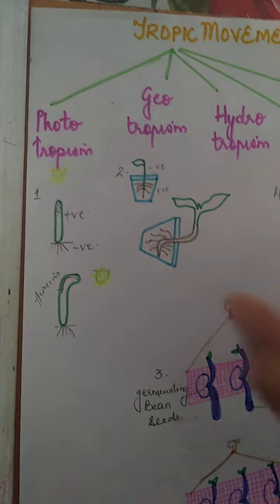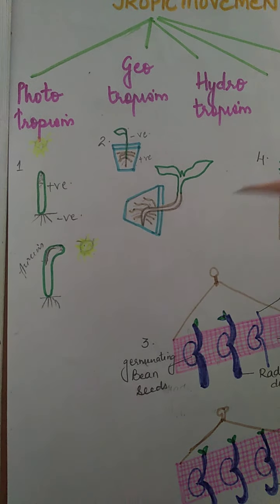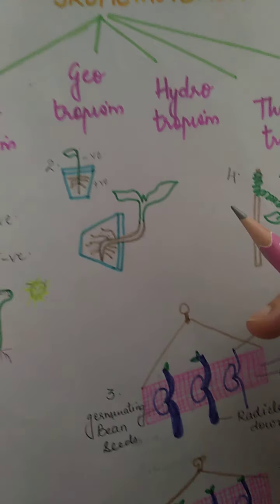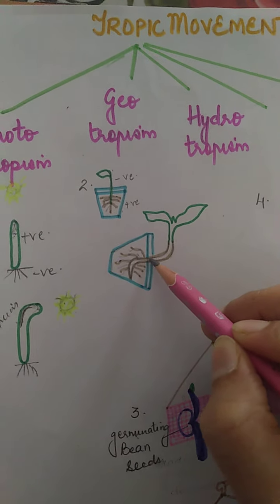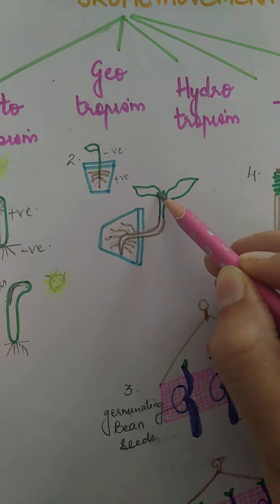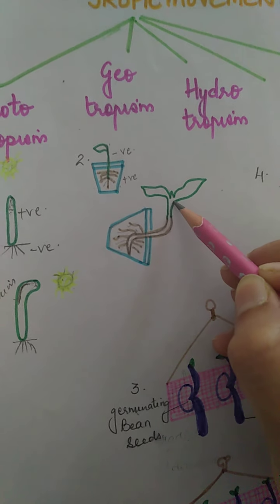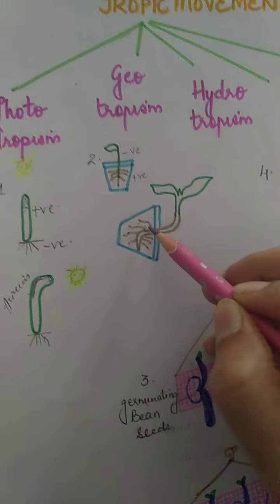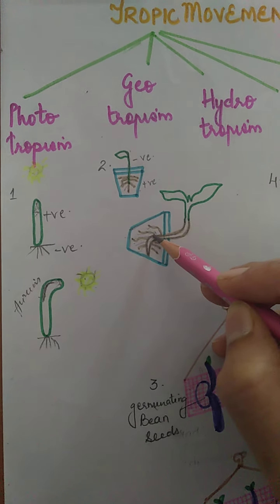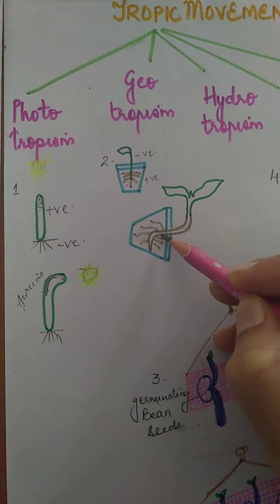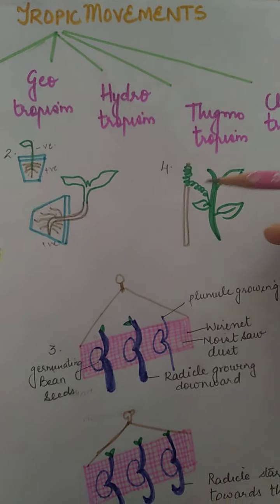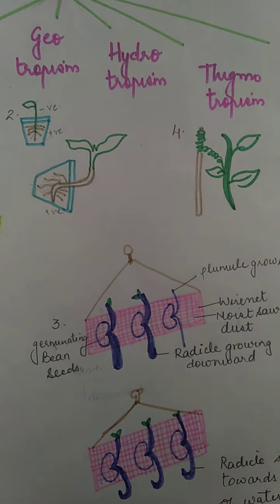We can take the example of a potted plant. Suppose someone kicks the pot and it falls over. After a few days, we notice that the shoot region, which was growing horizontally, starts growing upwards against the force of gravity — it shows negative geotropism. And the roots, which were growing straight, bend towards the gravity, showing positive geotropism. That's about geotropism.